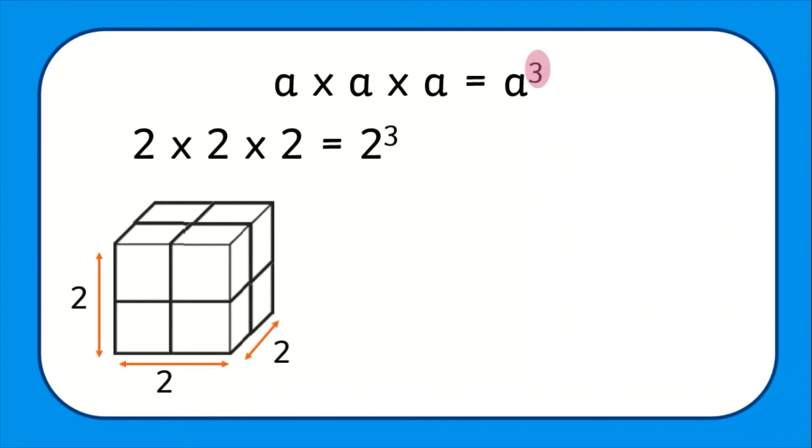How many smaller cubes would there be in this large cube altogether? First we find 2 times 2, which is worth 4. Then we multiply 4 by 2 and get 8. 2 cubed has the value of 8.